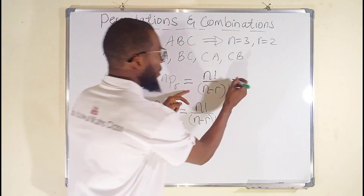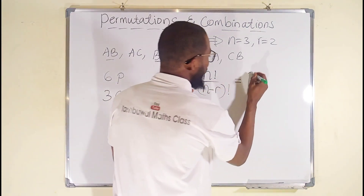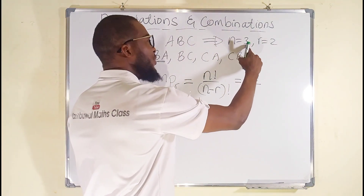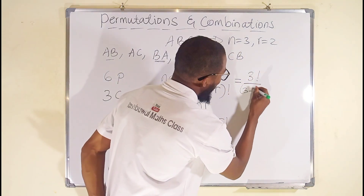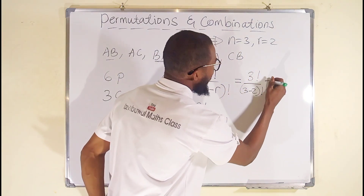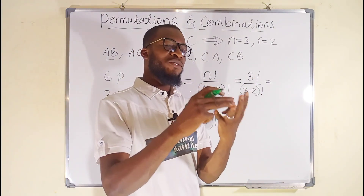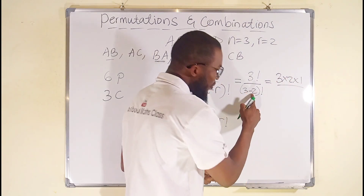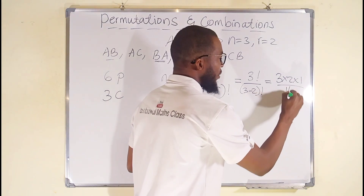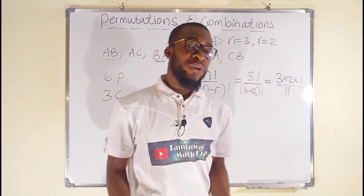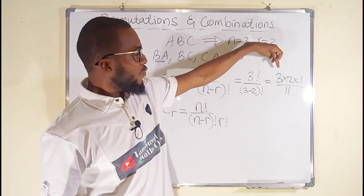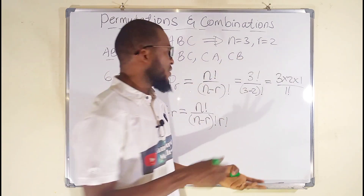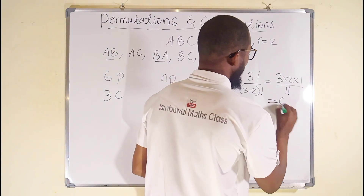For permutation: nPr = 3! / (3−2)! = (3×2×1) / 1! = 6 / 1 = 6. Remember, 1! and 0! are both equal to 1. So we get 6 permutations — which confirms our earlier result.